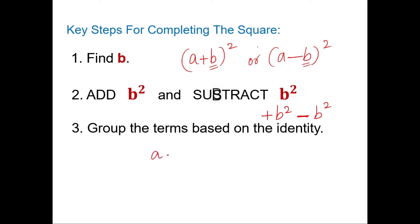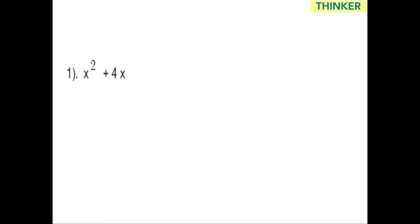The third step is to group the terms based on the identity — whether it's a plus b or a minus b, the whole square — and arrange all terms to complete the square. These are the simple steps to follow. Question one: x squared plus 4x — complete the square.